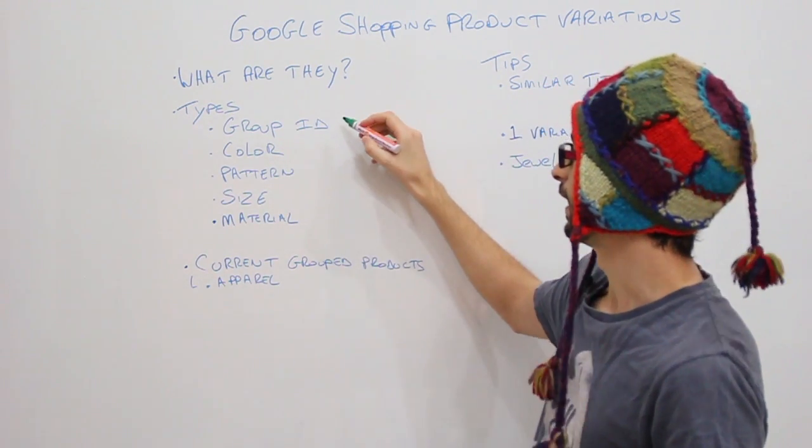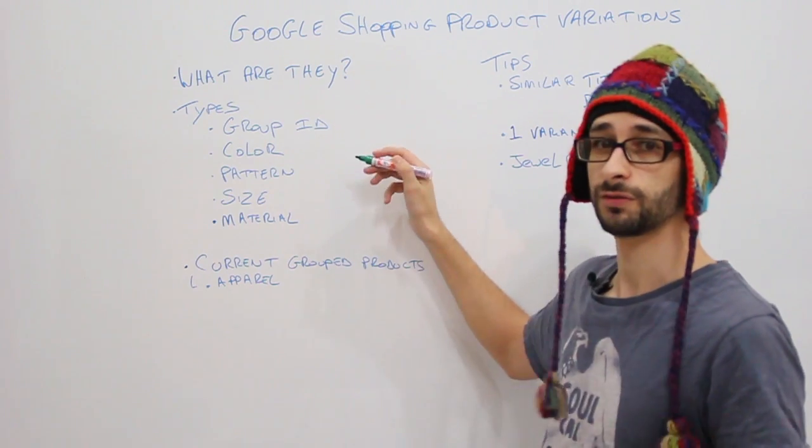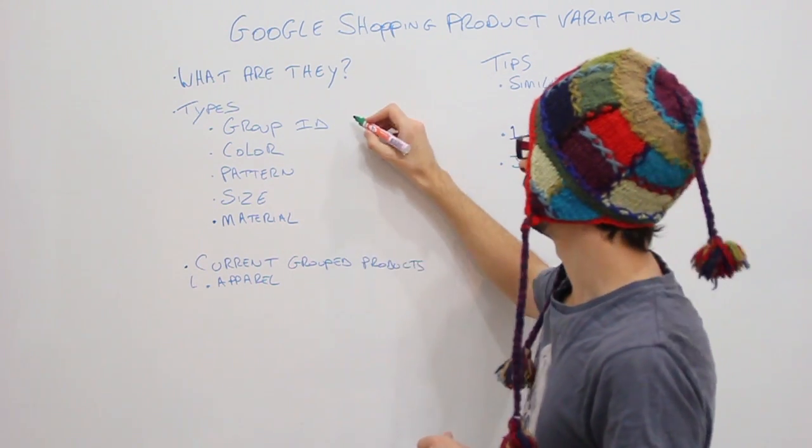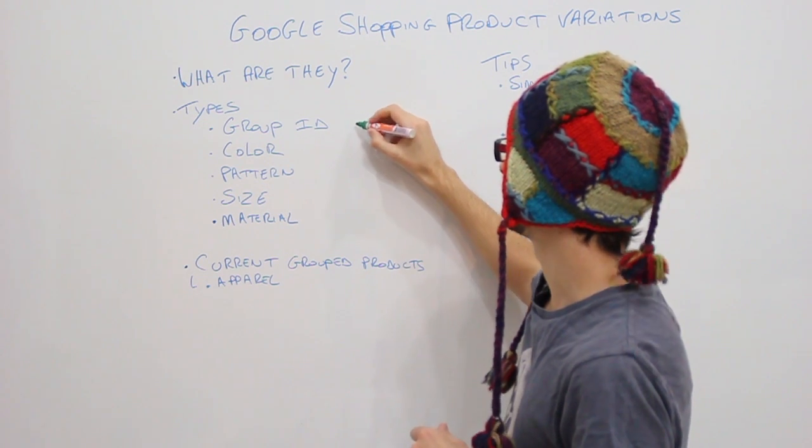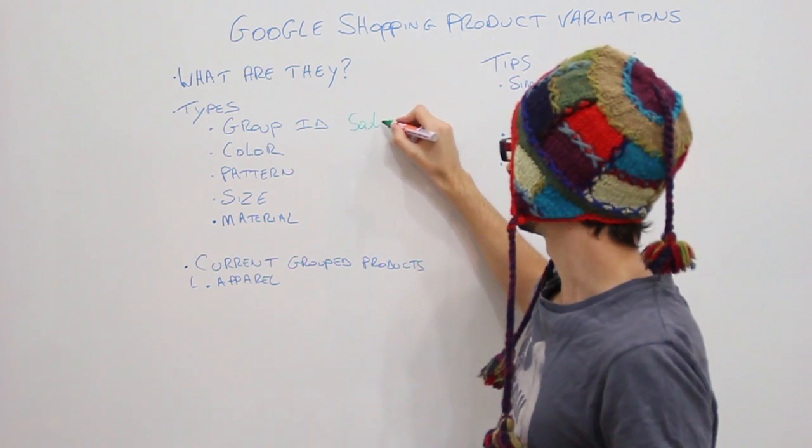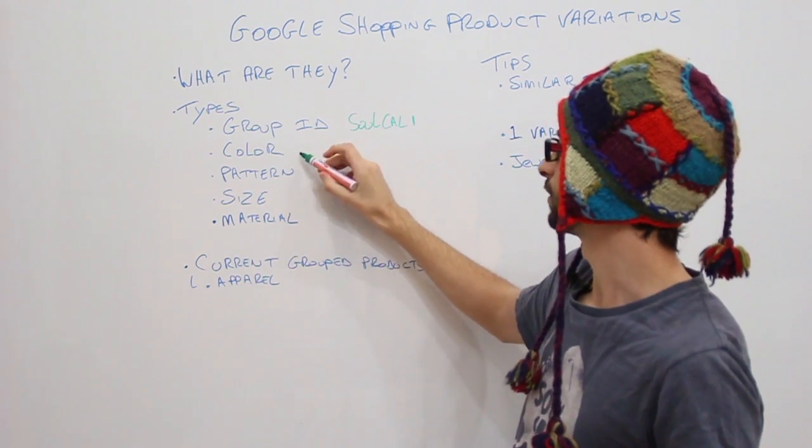These variations each product needs to have a group ID. For example, if we have five t-shirts with different colors, we need to assign one group ID. Let's say SoCal, the one that I'm wearing now, and then different types of colors.